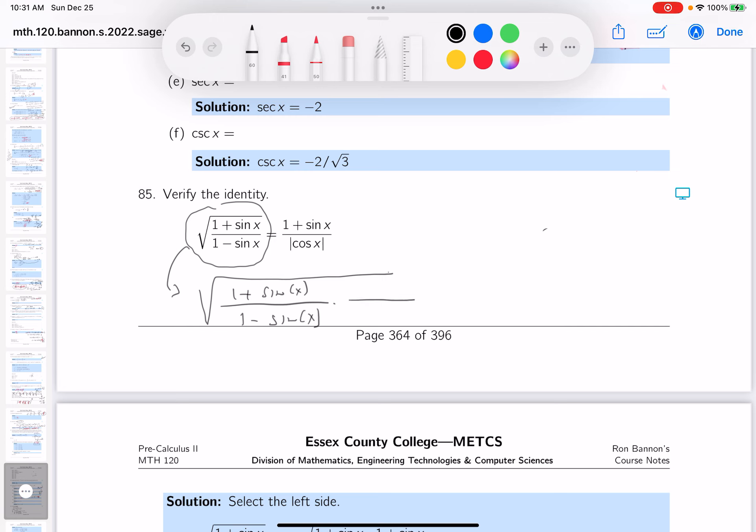I can multiply top and bottom by the bottom's conjugate, which would be 1 plus sine x.